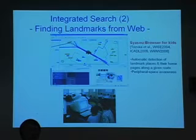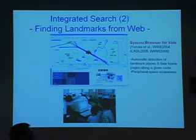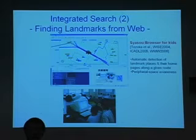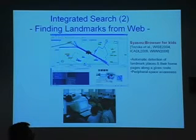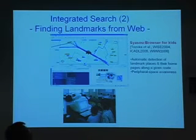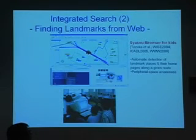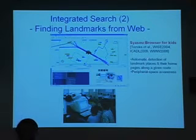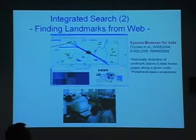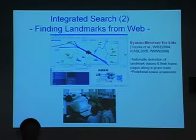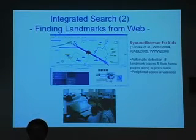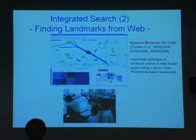This is another example of integrated search — a combination of GIS contents and web contents. This system automatically detects landmark places from web contents based on data mining technology. A landmark place is a very famous place in a town or any area. Furthermore, based on those landmark places, the system automatically retrieves web pages concerned with those landmark places.